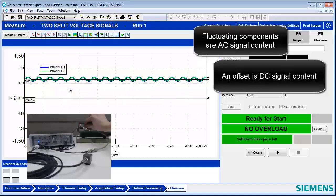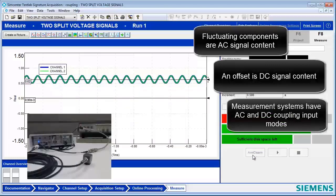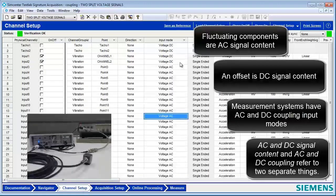When we go to measure the signal, there's a coupling field on the channel, and that can tell us whether we can see the DC or the AC component. I'll go to channel setup here, and we can see that